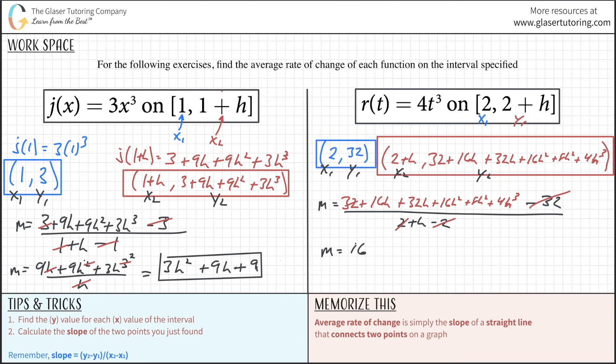Now we have (48h plus 24h squared plus 4h cubed) over h. We can reduce one h from each term. Combine the terms: 16 plus 32 is 48, and 16h plus 8h is 24h. The slope is 48 plus 24h plus 4h squared. You can factor out a common factor if you want, but I'll leave it.